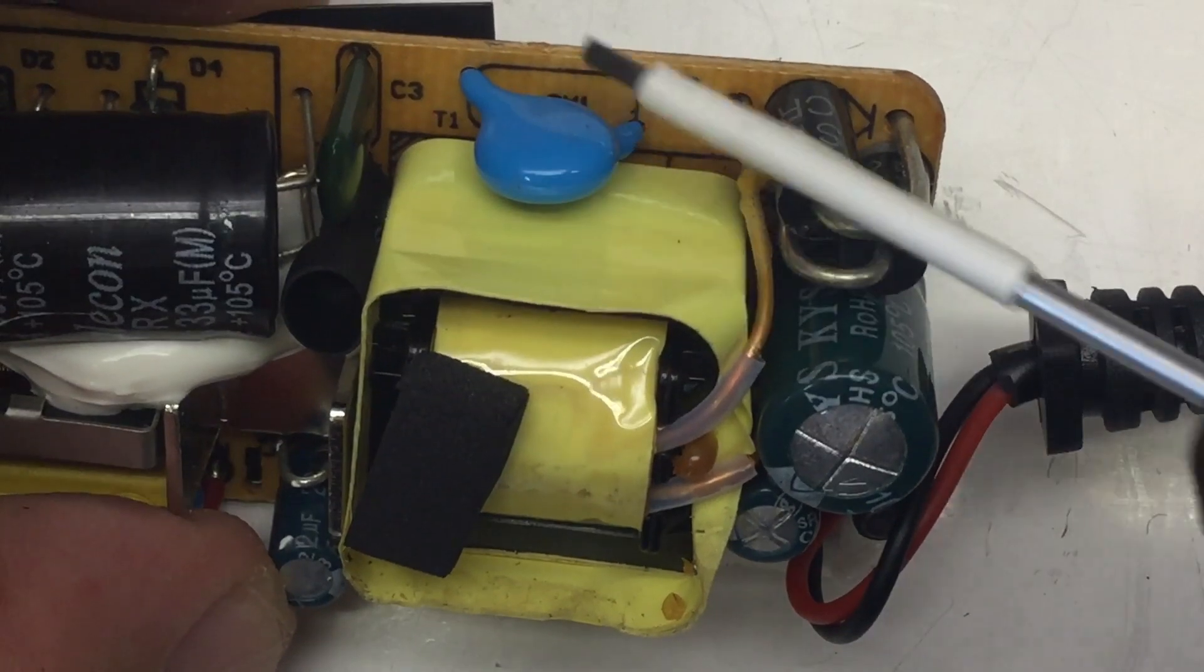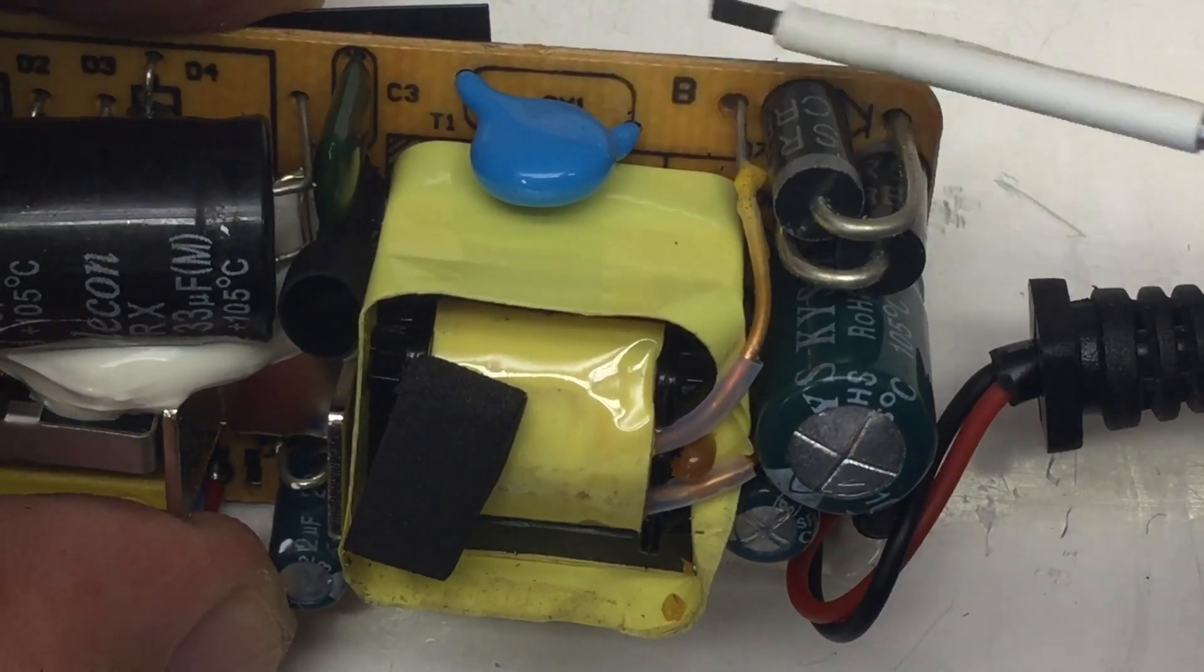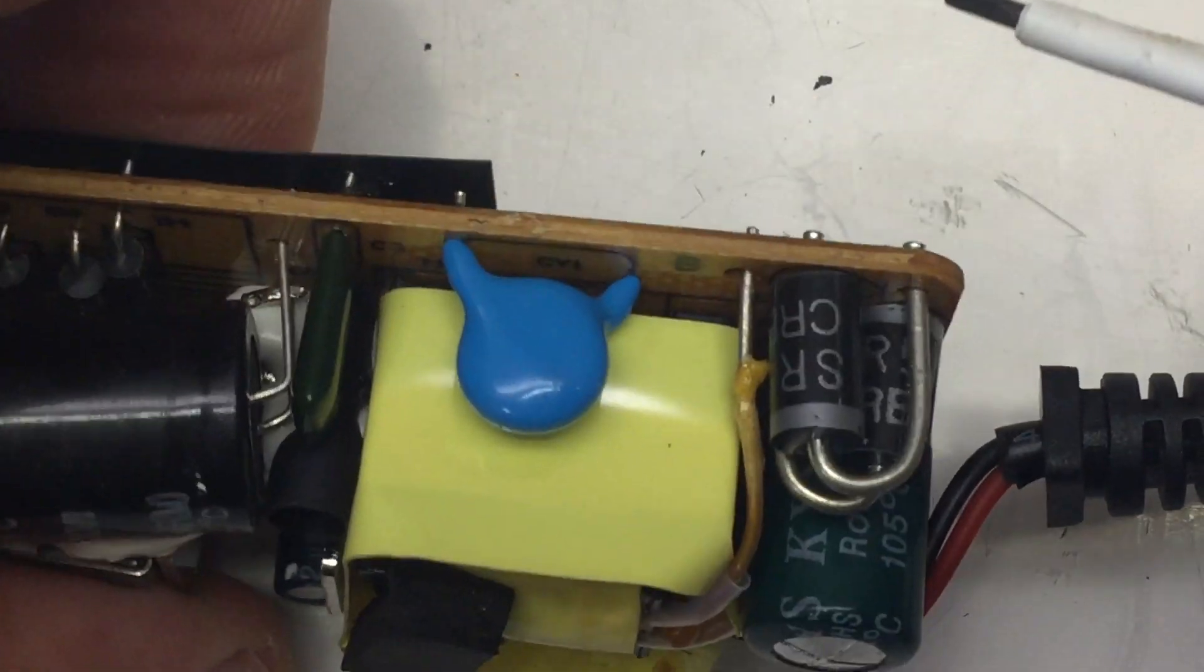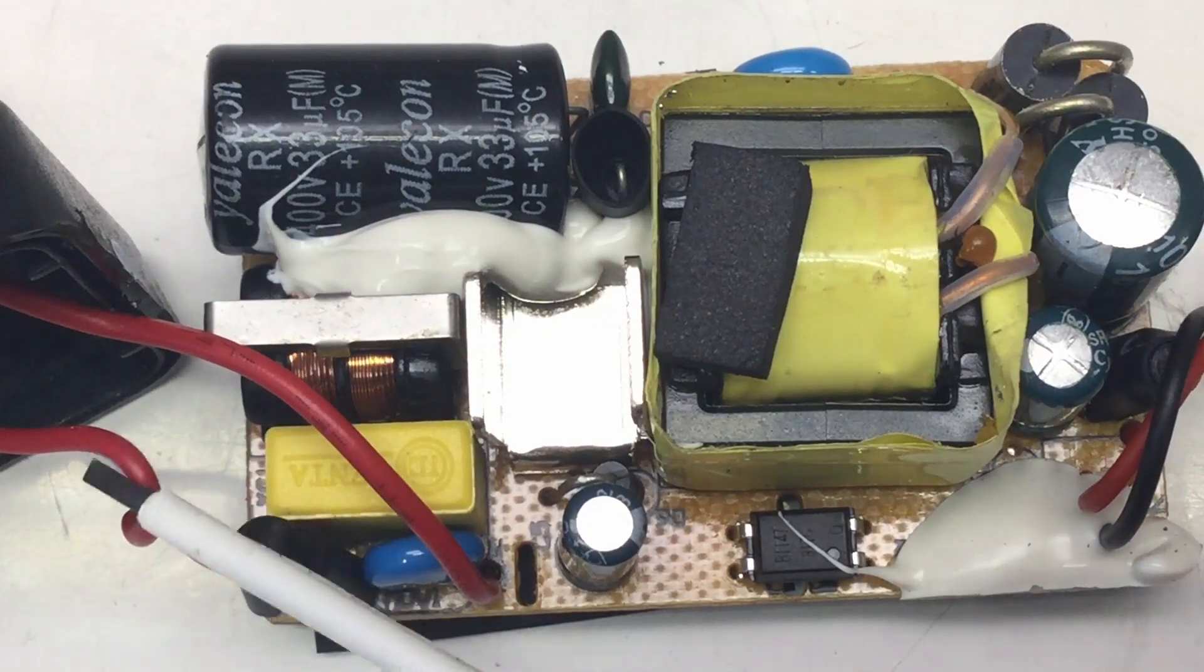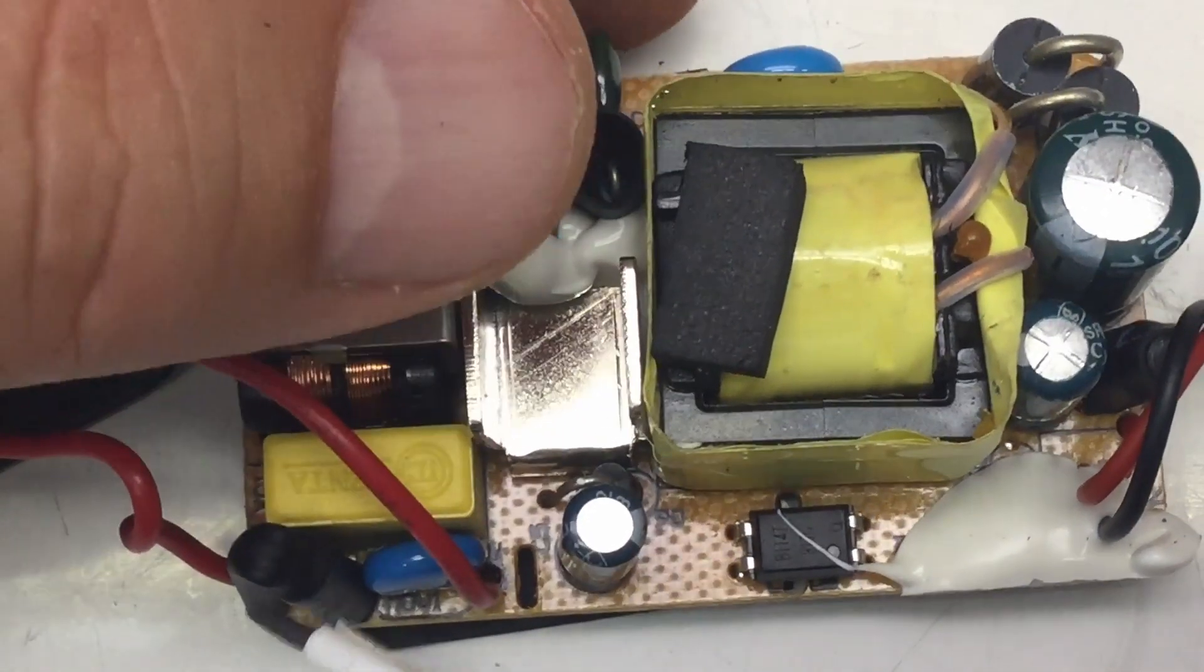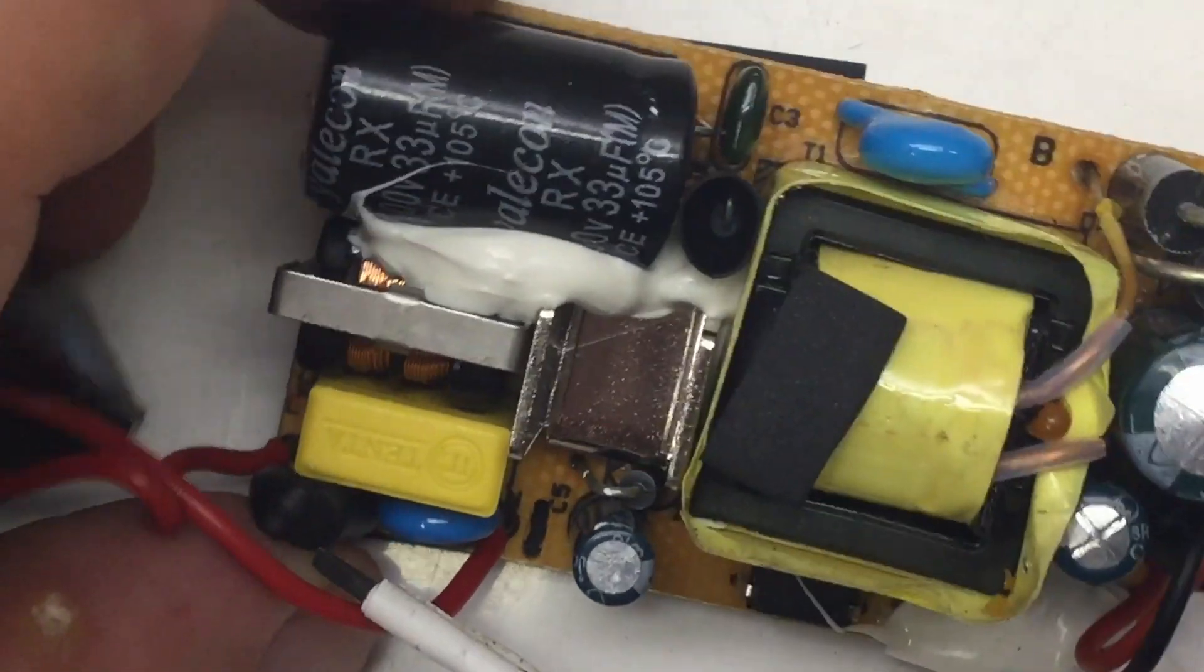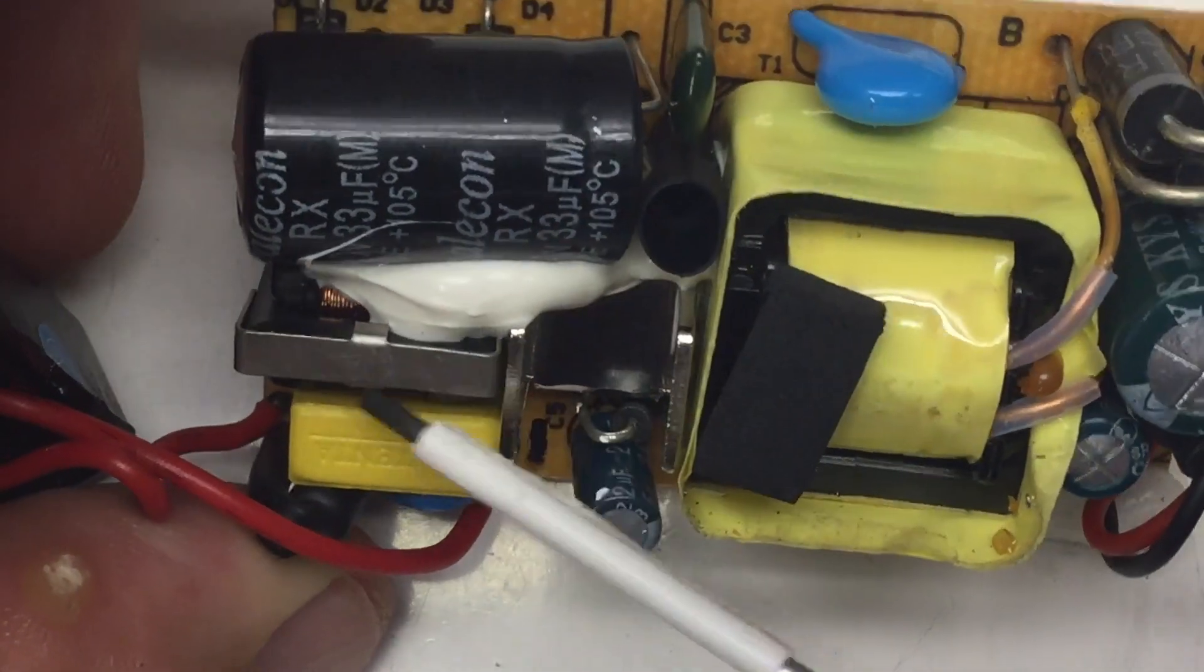And we have a proper EMF suppression capacitor here across the isolation between low and high voltage side. On the high voltage side, we have our AC input here and some kind of fuse. A little moth. Really surprising.